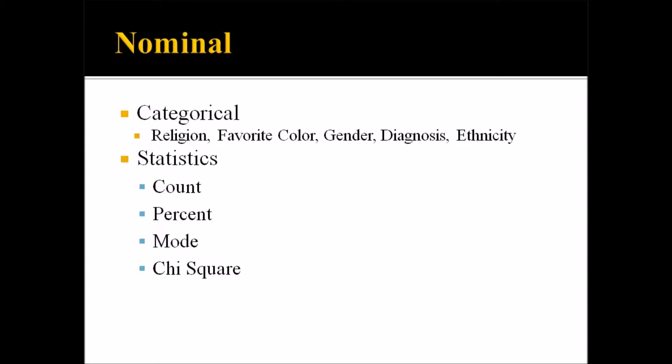We can, of course, count. In the example of favorite color, we can count the number of participants that selected blue or green. We can also calculate the percent. If you had 100 participants and 55 were female and 45 were male, you could say 55 percent of the sample was female. You can also calculate the mode. If five indicated their favorite color was blue and three yellow and two red, you could say the modal favorite color was blue.